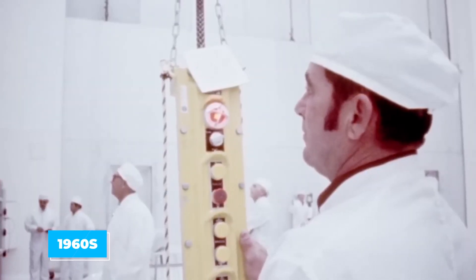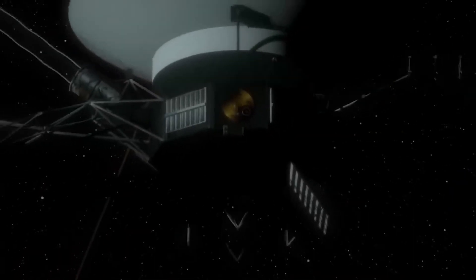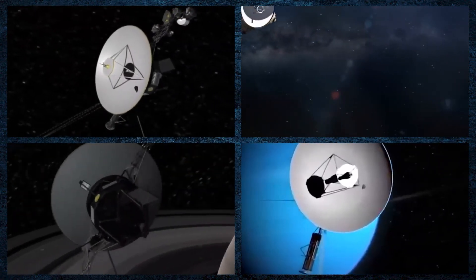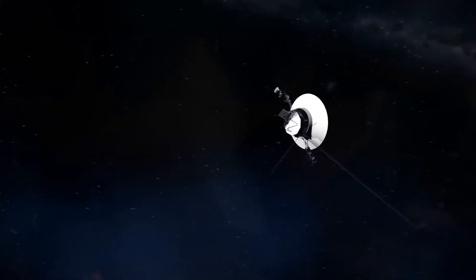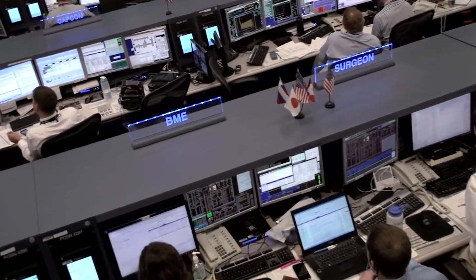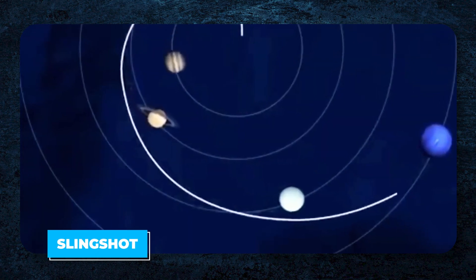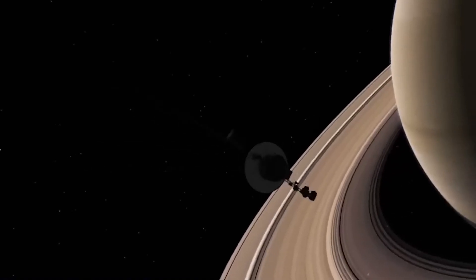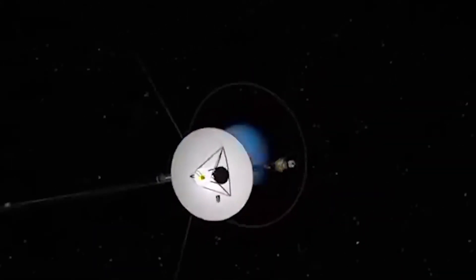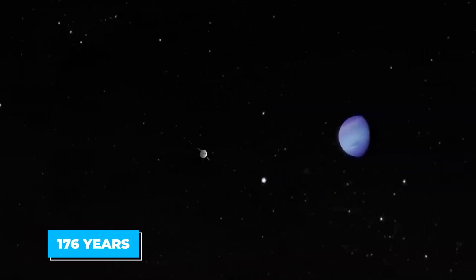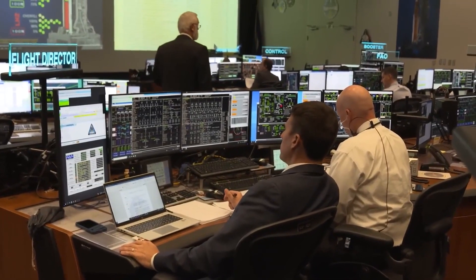Back in the 1960s, a brilliant scientist named Gary Flandro figured out something cool. Between the late 1970s and early 1980s, the big planets - Saturn, Jupiter, Neptune, and Uranus - would line up just right, creating a once-in-a-lifetime chance for a spacecraft to slingshot past them using their gravity. This perfect setup only happens every 176 years.